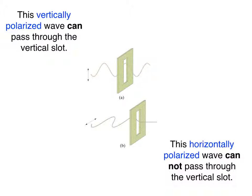Now imagine passing the rope through a vertical slot, like the slot formed between the wooden slats of a picket fence. The first wave — generated by moving your hand up and down, the vertically polarized wave — will pass easily through the vertical slot. The second wave — generated by moving your hand left to right, the horizontally polarized wave — will be blocked by the vertical slot. Thus it is possible to design a filter that will allow waves in a certain polarization to pass while blocking waves of other polarizations. We call this type of material a polarizing filter or simply a polarizer.